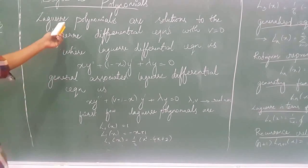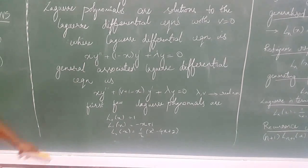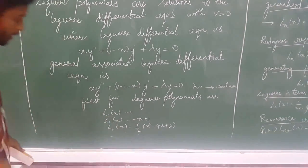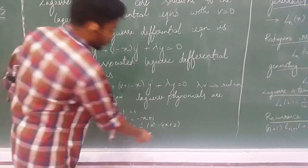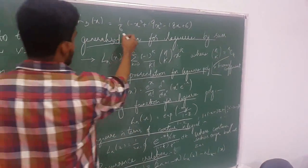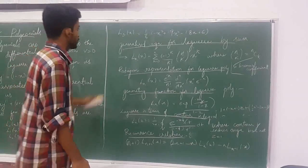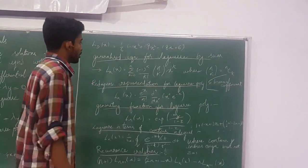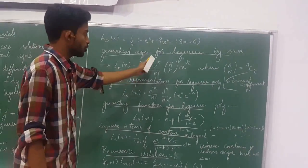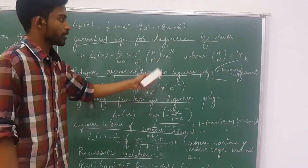The first few Laguerre polynomials are: L_0(x) = 1, L_1(x) = -x + 1, L_2(x) = (1/2)(x² - 4x + 2), and L_3(x) = (1/6)(-x³ + 9x² - 8x + 6). The generalized equation can be expressed as a sum: Σ (k=0 to n) [(-1)^k / k!] × C(n,k) × x^k, where C(n,k) is the binomial coefficient.